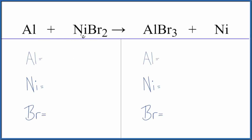To balance this equation, we have Al plus NiBr2, aluminum plus nickel-2-bromide. So to balance it, we need to count the atoms up on both sides.